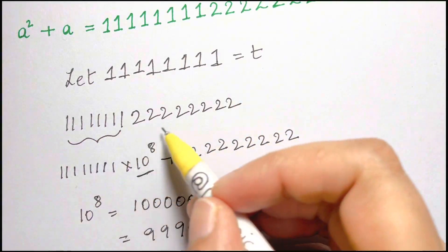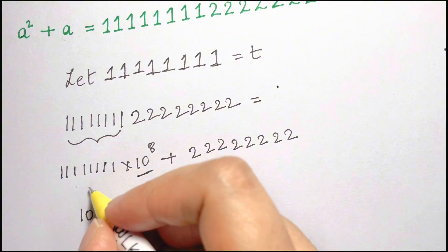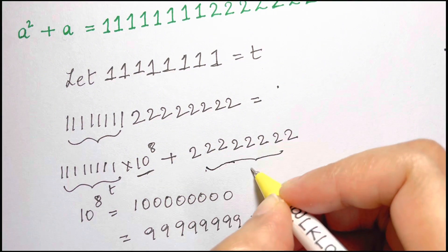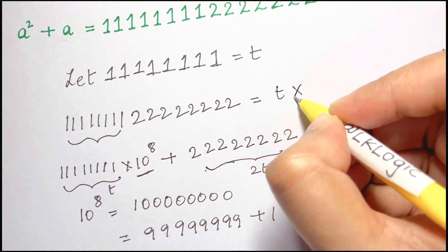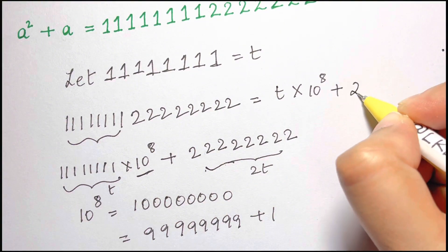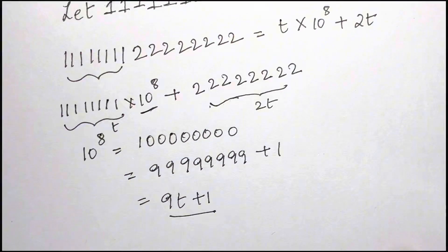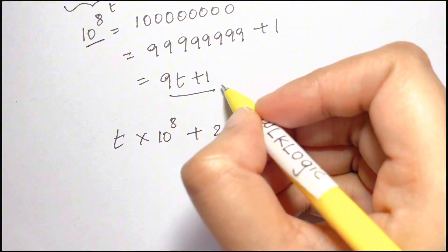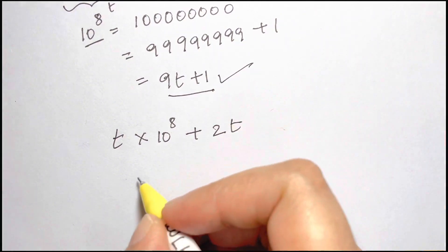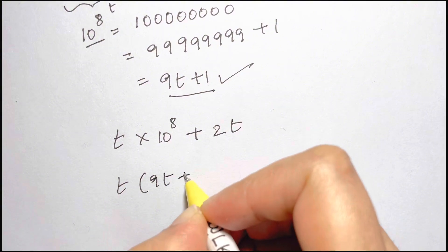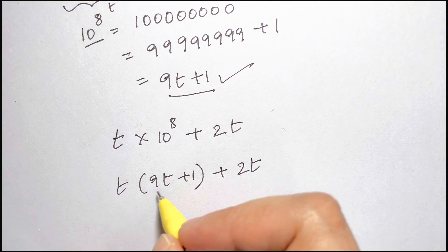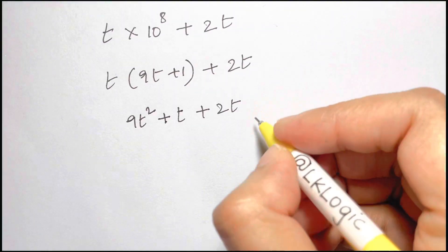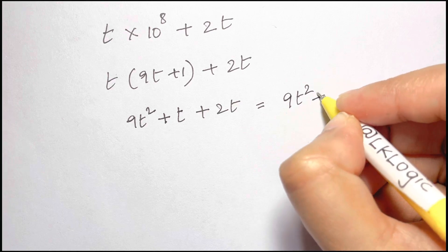So this 11111111 + 22222222 can be written as t times 10 to the power of 8 plus 2 times t. Now we substitute 10 to the power of 8 as 9t + 1, giving us t times (9t + 1) + 2t. Multiplying out: that will be 9t² + t + 2t, which equals 9t² + 3t.